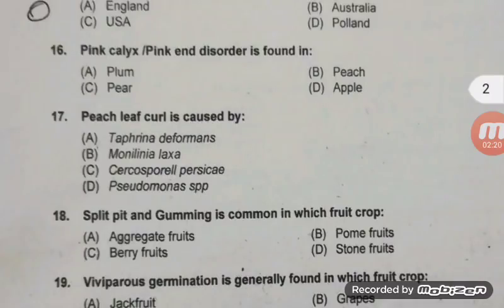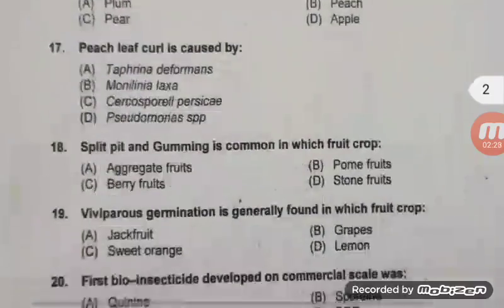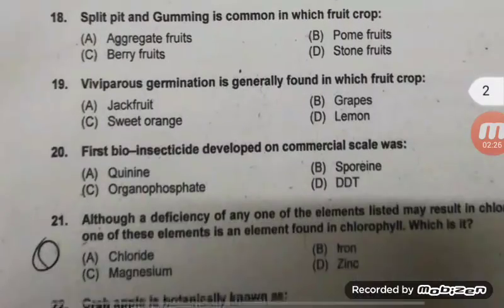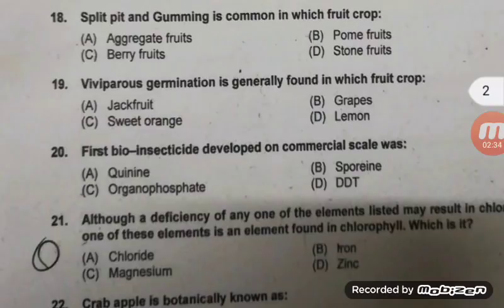Please don't confuse this question — split pitting and gumming is common in peach, which is a stone fruit, so the right answer is D. Vivipary germination is generally found in which fruit crop? Right answer is jackfruit — B. Vivipary means germination of seed within the fruit while the fruit is still attached to the plant.